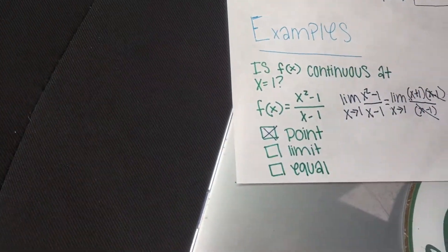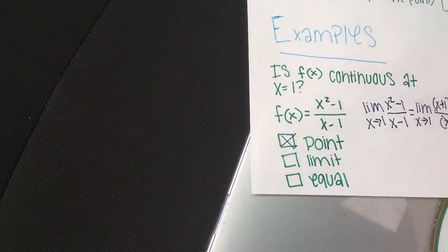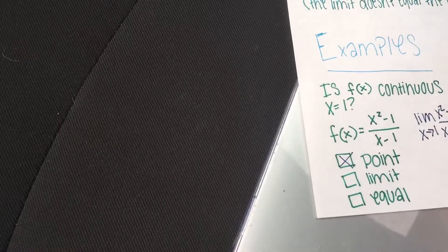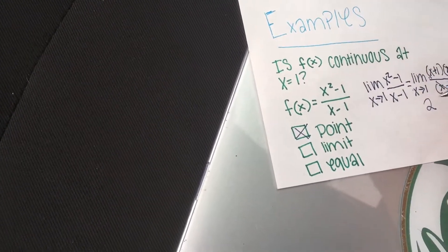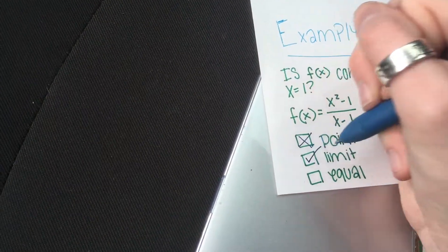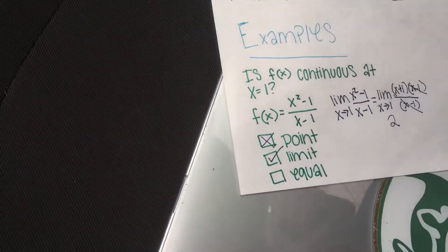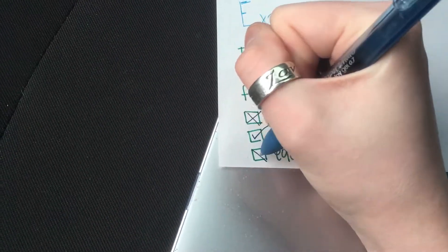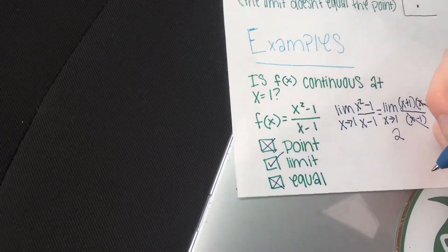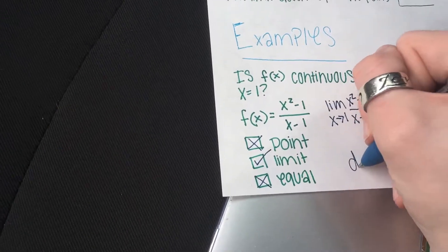And so whenever we do that, that gives us a hole at x equals 1. So there is not a point, but there is a limit, and so the limit is equal to 1 plus 1 is equal to 2. So we do have a limit, but since there is no point to start with, you can't even have them being equal. So it is not continuous, it is discontinuous.